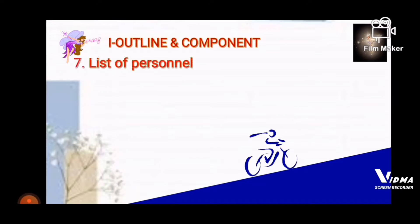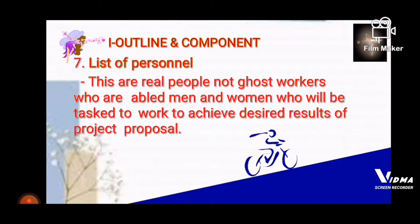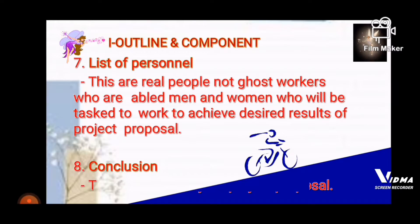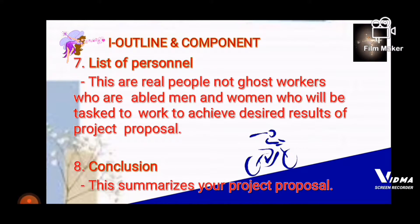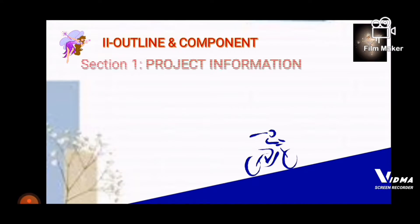Number seven is the List of Personnel — these are real people, not ghost workers, who are able men and women tasked to work toward achieving the desired results of the project proposal. The last component is the Conclusion, which summarizes your project proposal. Moving on to Part 2 of the outline and components of a project proposal.